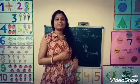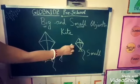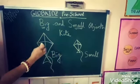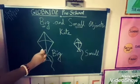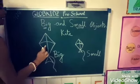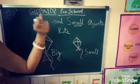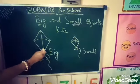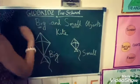So let's start. Now look at these kinds. There are two kinds. Are they of the same sizes? No, they are of different sizes. The first one is big in size and the second one is small in size. When we compare objects based on their size, we get big and small objects.